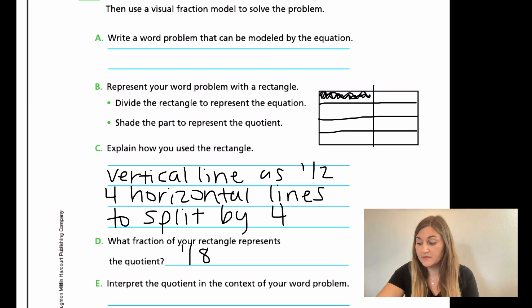And then, E, interpret the quotient in the context of your word problem. I was dealing with pizza. So, I would say one-eighth of the pizza.